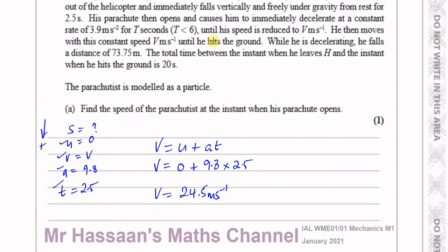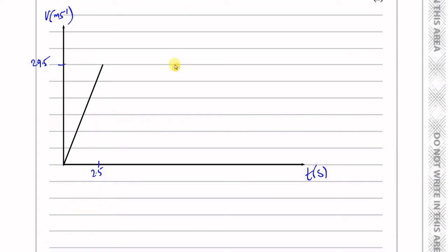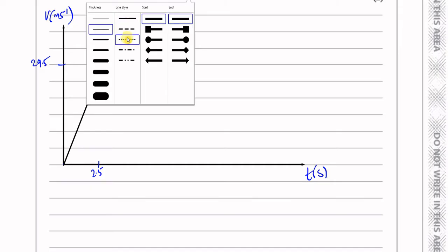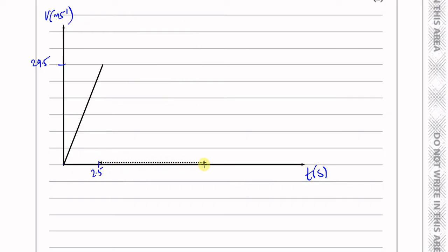His parachute then opens and causes him to immediately decelerate at a constant rate of 3.9 meters per second squared for T seconds. So his speed decreases for T seconds — there's a time frame of T seconds between 2.5 and 2.5 plus T. His velocity drops from 24.5 to V. We don't know what V is but it has to be something low because he's going to hit the ground at that velocity.